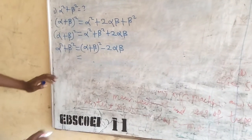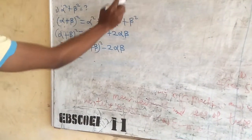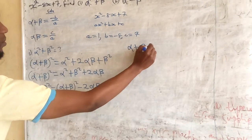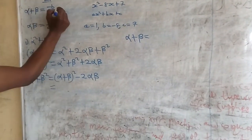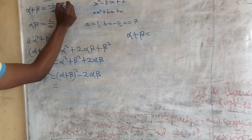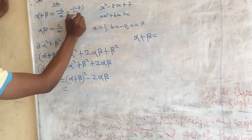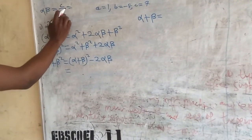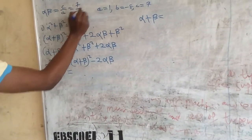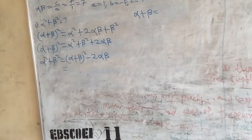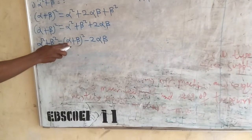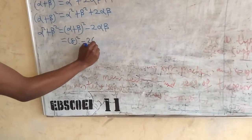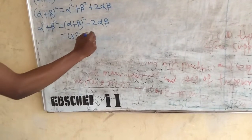Now, we are going to look for alpha plus beta. Alpha plus beta is equal to minus b over a. b is minus 8, so we have minus of minus 8 over 1, which gives us alpha plus beta equals 8. Then, alpha beta is c over a. c is 7 and a is 1, so alpha beta equals 7.